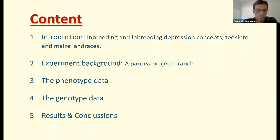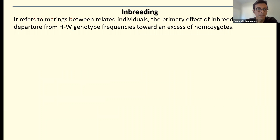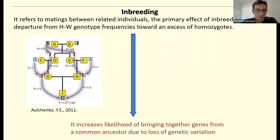Let's start talking about inbreeding. Inbreeding refers to the mating between relative individuals, and the primary effect of inbreeding is the departure of Hardy-Weinberg genotype frequencies toward an excess of homozygotes. The major consequence of inbreeding is that it increases the likelihood of bringing together genes from a common ancestor, due to a reduction of genetic variance. The diagram on the left is an example of how crossing relative individuals increases the probability of having a gene from a common ancestor.